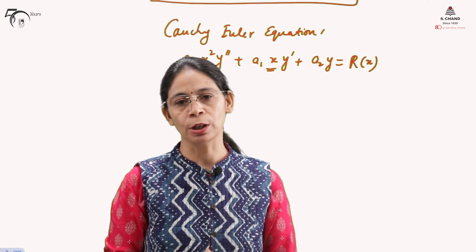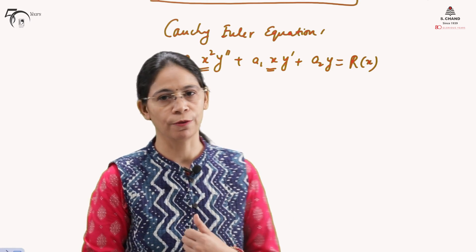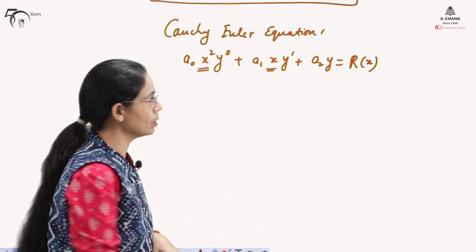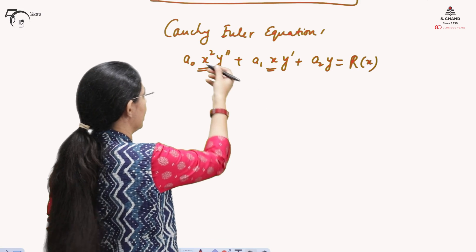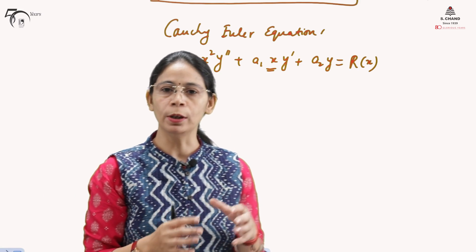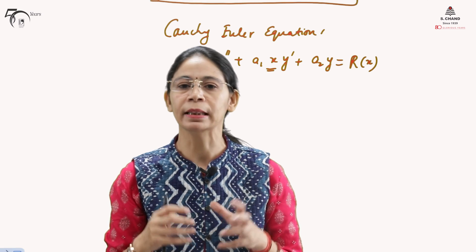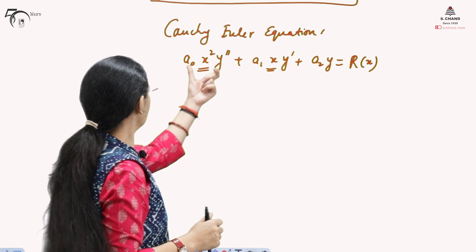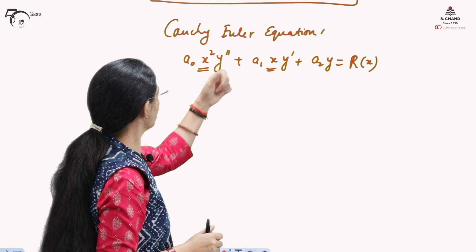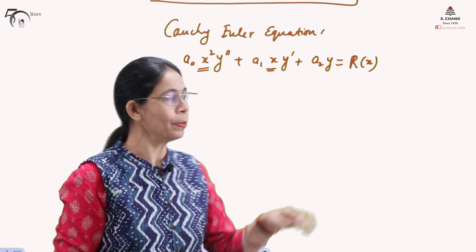We must remember that an equation is in Cauchy-Euler form only when the power of x strictly equals the order of the derivative in each term — in the term with y'' the derivative is of order two, so the power of x is 2.